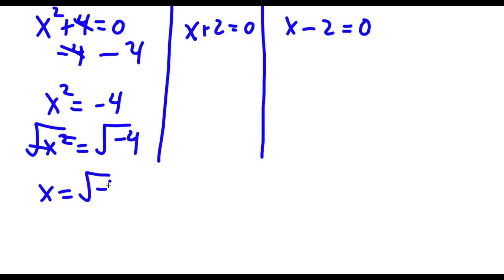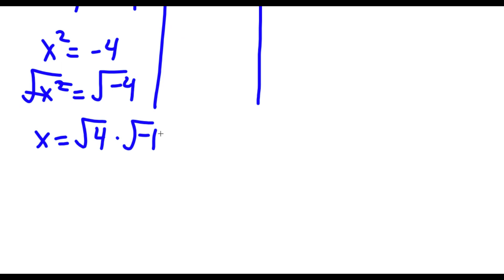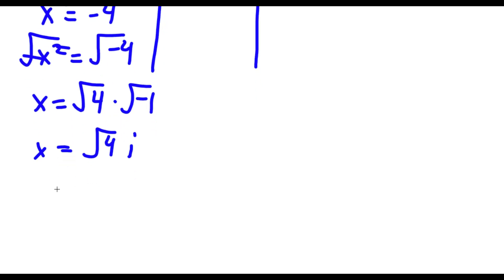That's the same thing as the square root of 4 times the square root of negative 1, and the square root of negative 1 is equal to i. So now I have x is equal to the square root of 4 times i. The square root of 4 is positive or negative 2, so I have x equals positive or negative 2i.